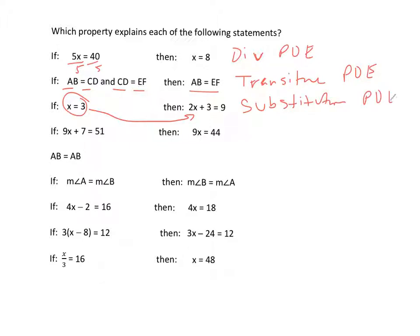And the substitution and transitive are often very similar. Sometimes you can almost interchange them. I guess the key thing is the transitive usually has the if this equals this and this equals that, then this. The substitution is like this number is going in and replacing something. But you can argue that in some ways they are similar.